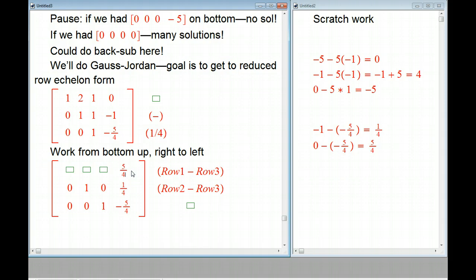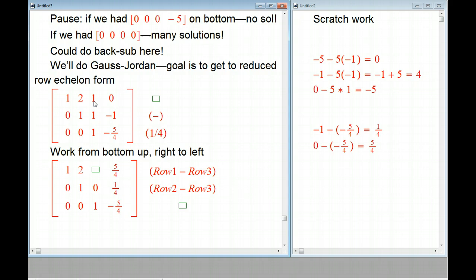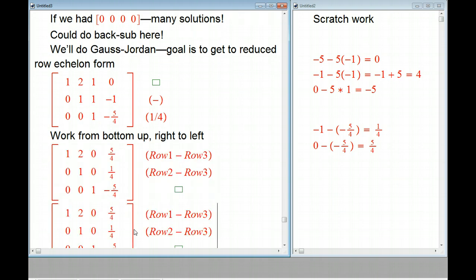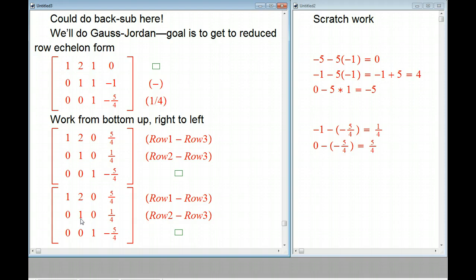We are so close to being done. The only thing we need to do is use this one, this pivot, to kill what's above it. Then we will have each pivot is in a row, is in a column where it's one and the other ones are zeros, extremely standardized. So we've done these things. Now we're just going to take row one and we're going to subtract two times row two.